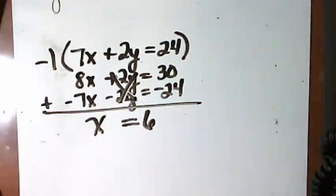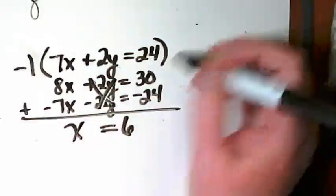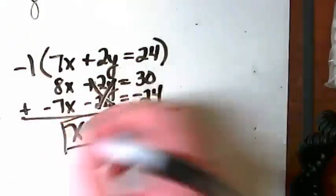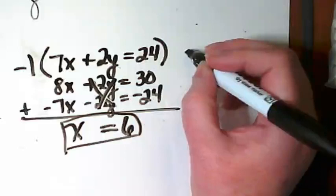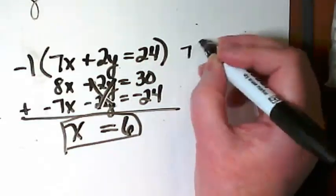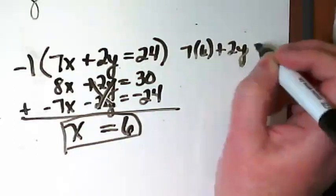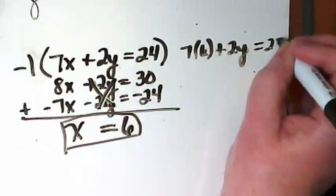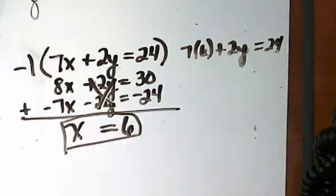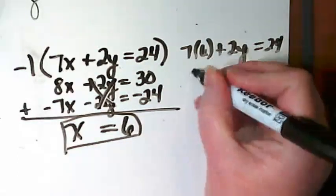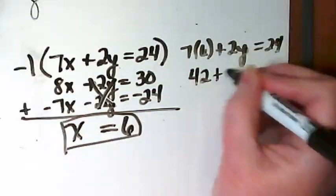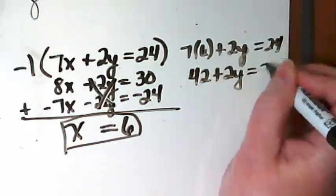So now I can go back to either one of those first two equations and plug this x equals 6 in. So I'm going to do 7 times 6 plus 2y equals 24. 7 times 6 is 42, plus 2y equals 24.